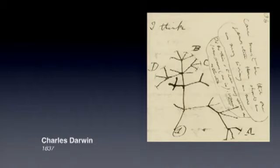And with this famous entry in his notebook, he begins in the top left-hand corner with, 'I think,' and then sketches out the first tree of life, which is his perception of how all the species, all living things on Earth are connected through evolutionary history, the origin of species through natural selection and divergence from an ancestral population.